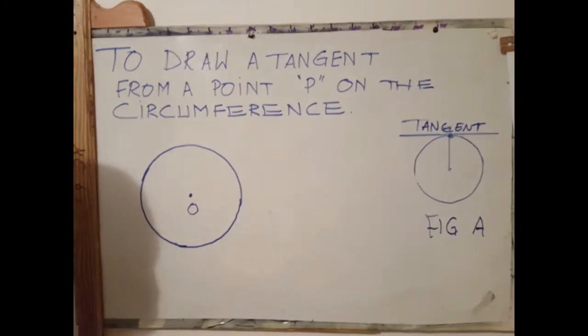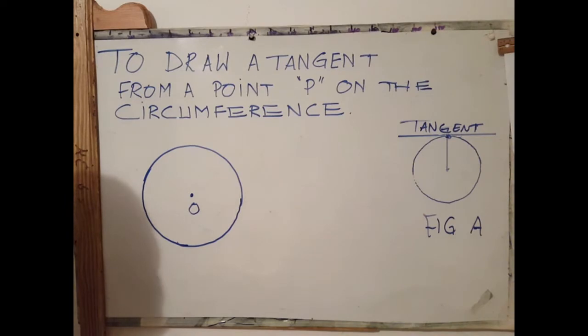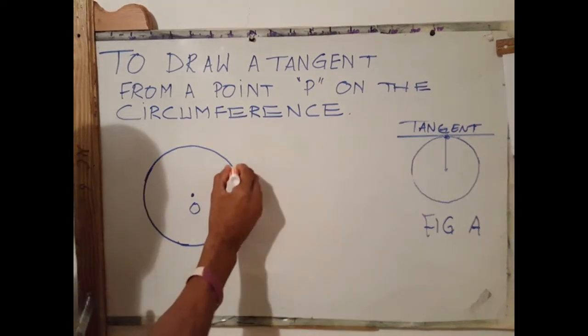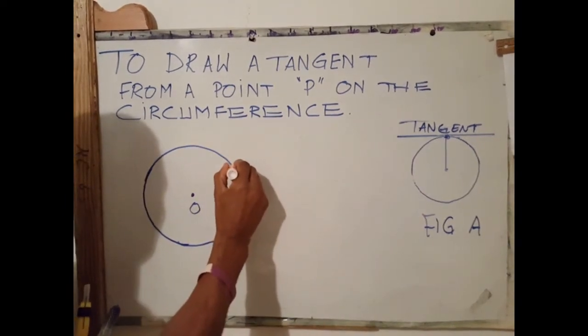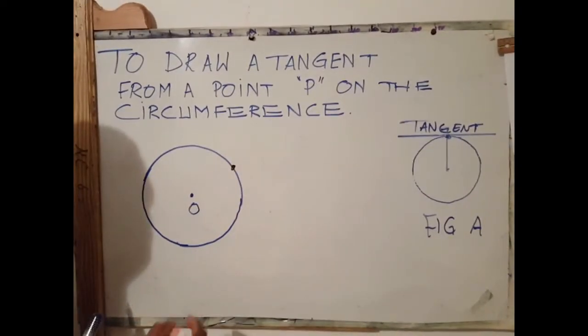The next step is to identify where we want P to be, where we want the tangent to form. So this is my point P. I will label my point P.